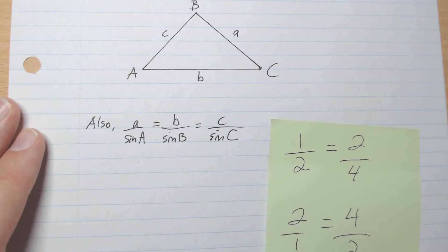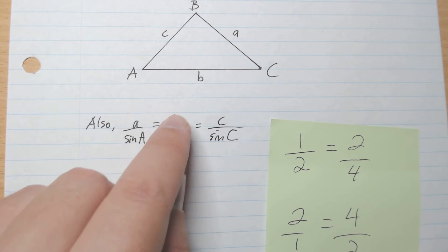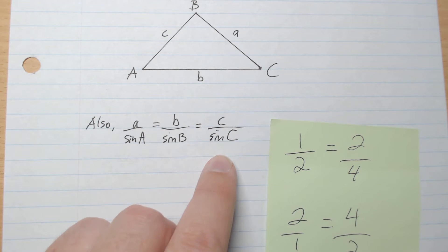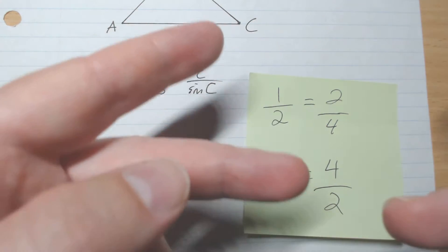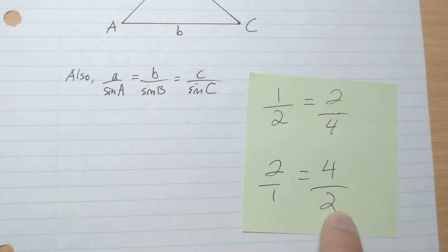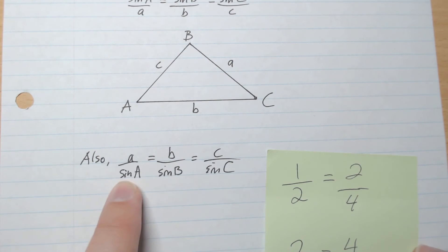Also we can write it a little differently. We can say a over sine A equals b over sine B equals c over sine C. Just a reminder, if you have 1 over 2 equals 2 over 4, you can flip them both: 2 over 1 equals 4 over 2. So that's what we did here.